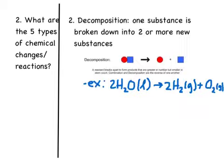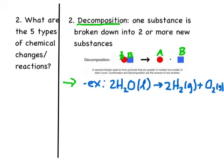In a decomposition reaction, you always start with one substance, and it's broken into two or more new smaller substances. We can represent this as compound AB breaking apart into A and B separately. A real-world example: liquid water can be decomposed into hydrogen gas and oxygen gas.